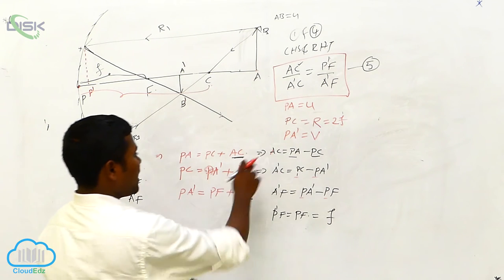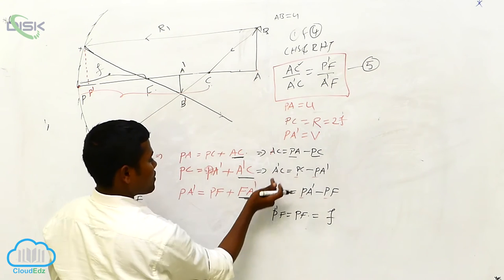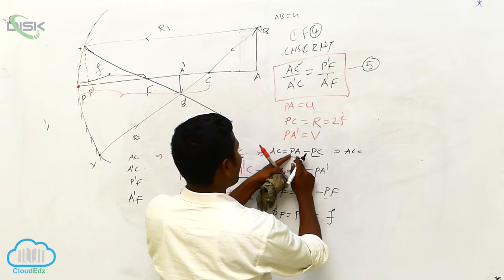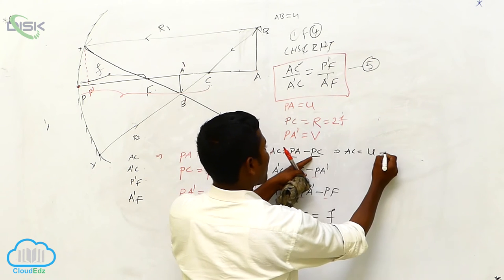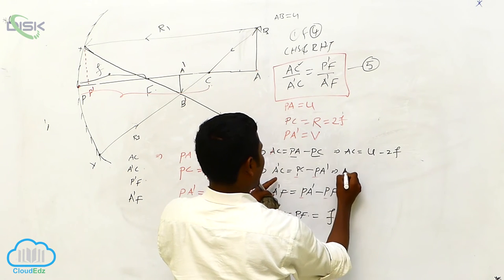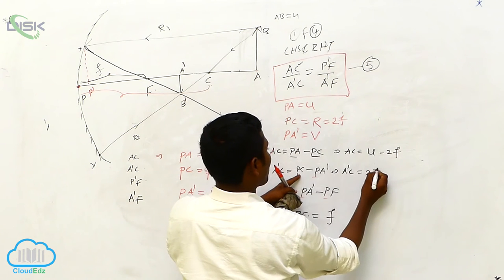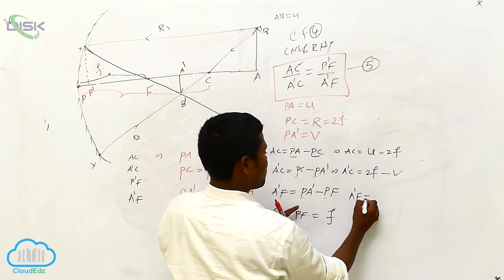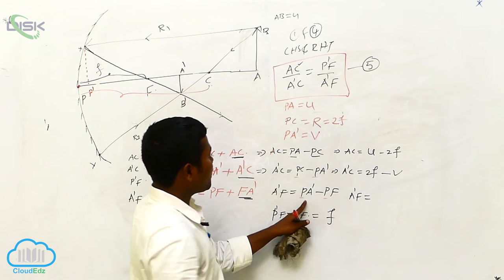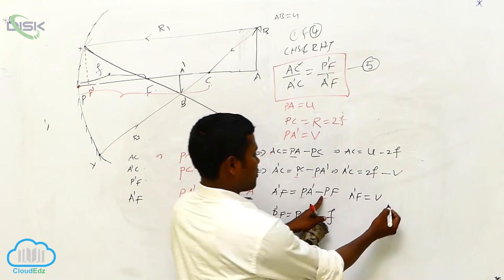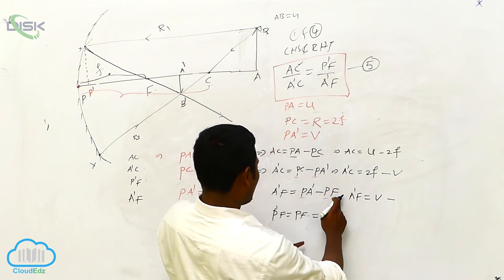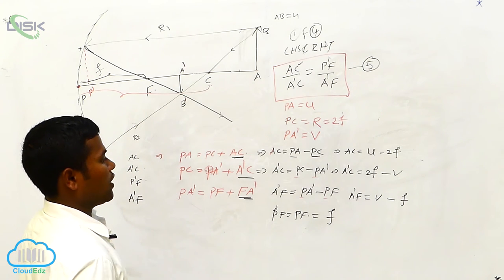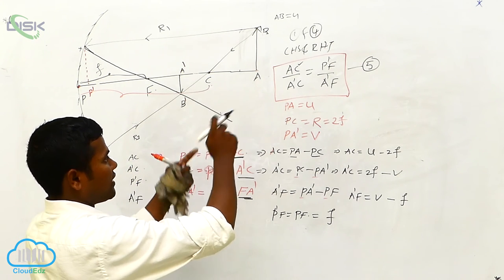All we got. Simply I am substituting. AC is equal to u minus 2f. A dash C is equal to 2f minus v. PF is equal to small f. A dash F is equal to v minus f. So all values are obtained. Simply take these values and substitute into equation number 5.